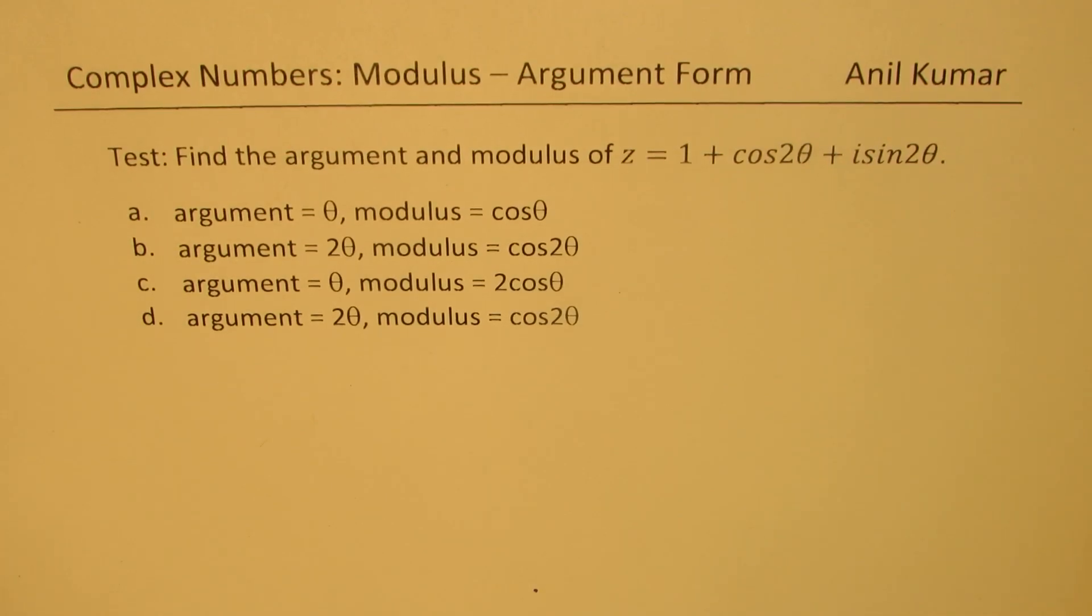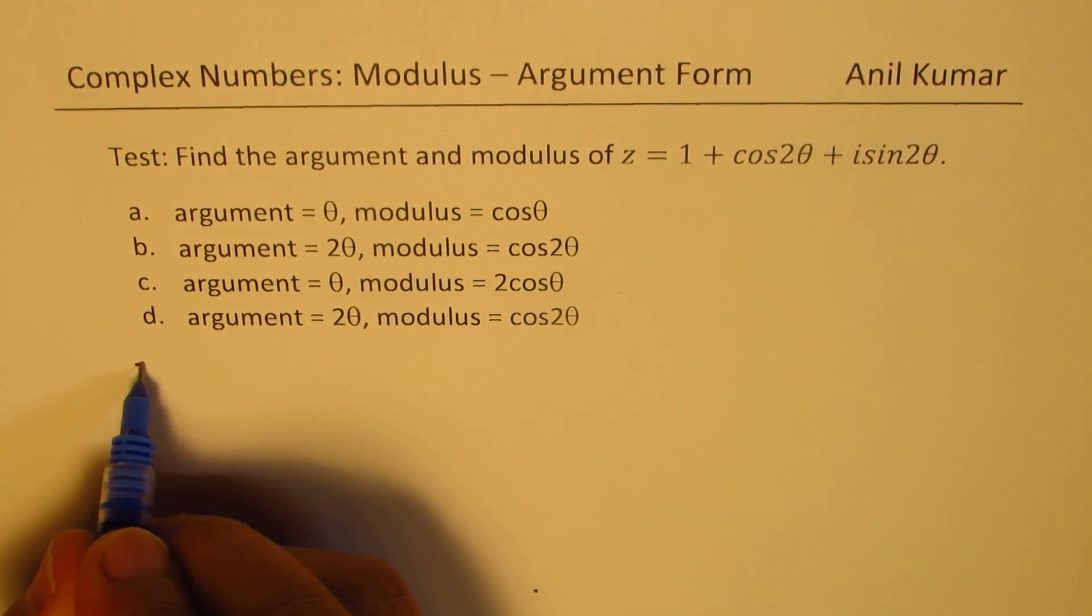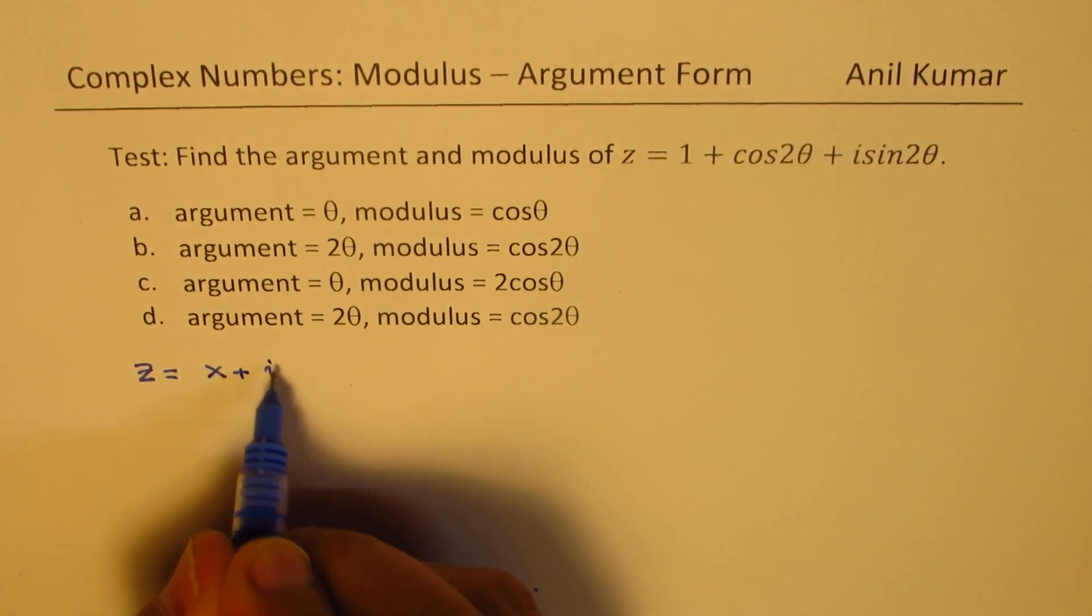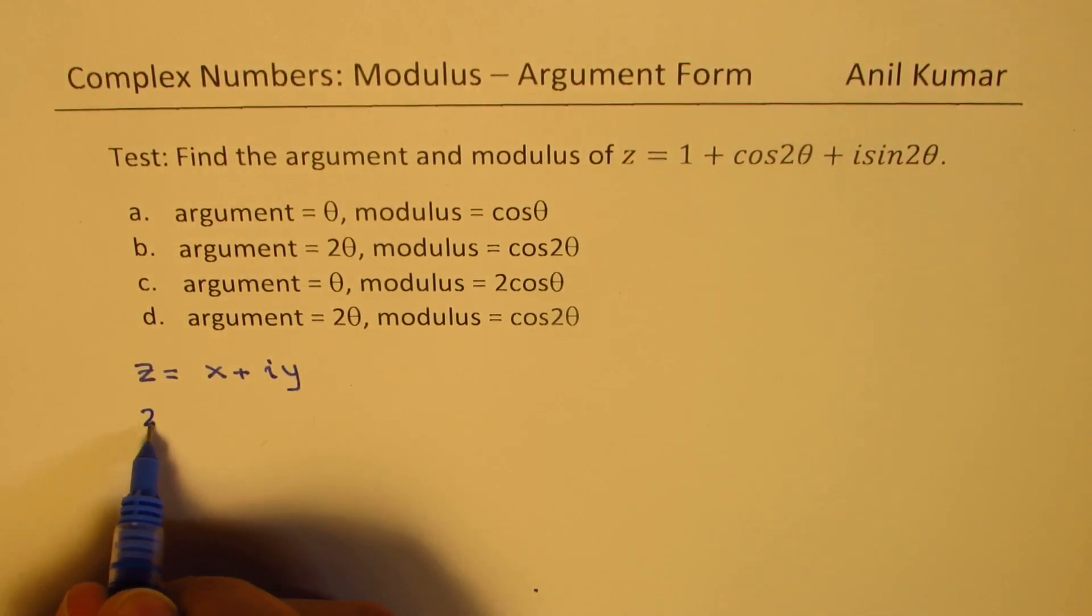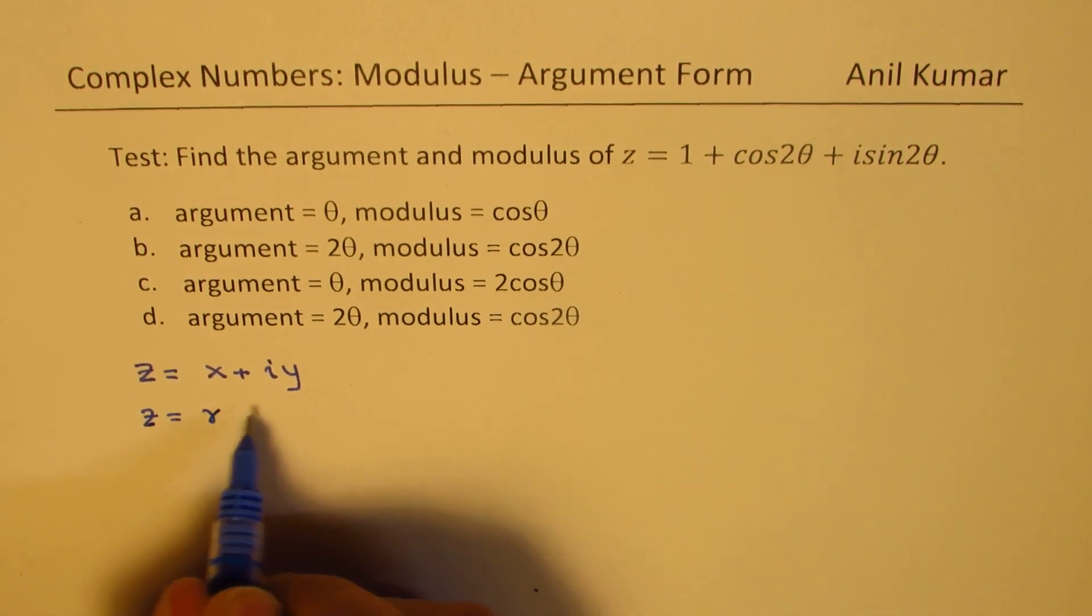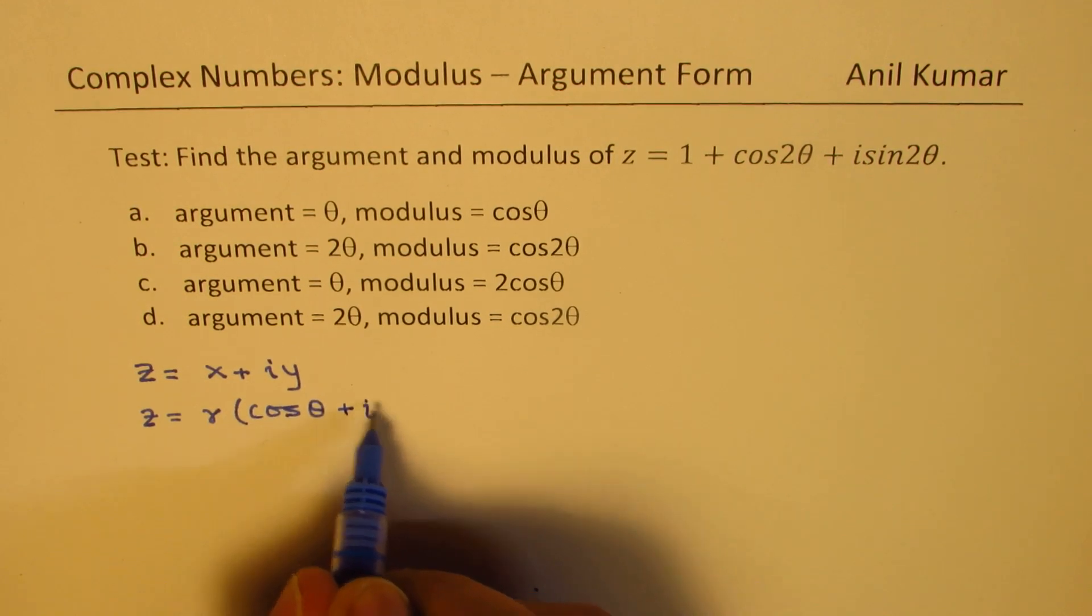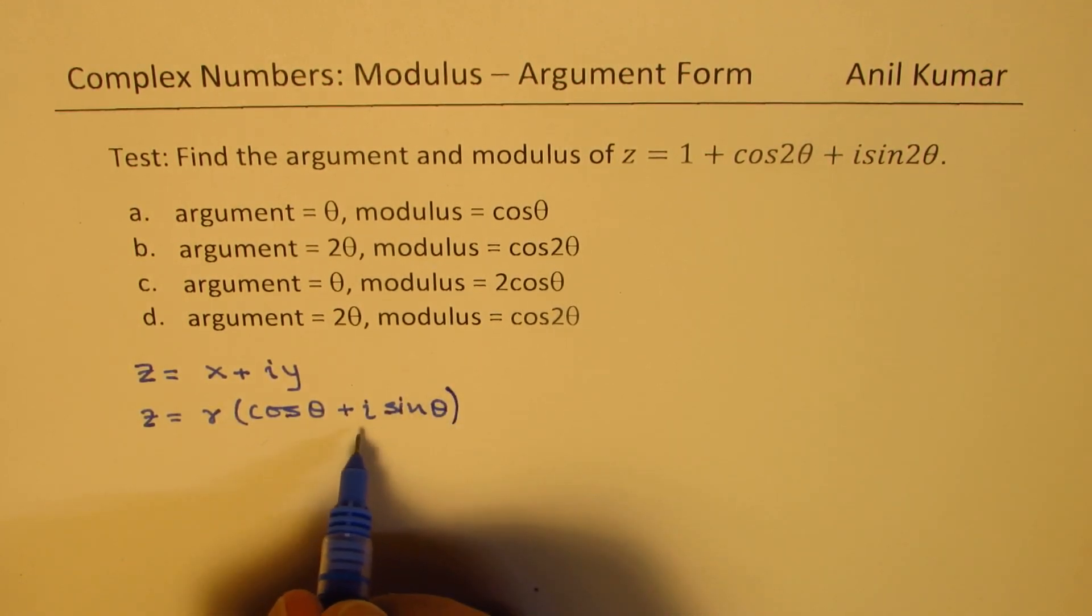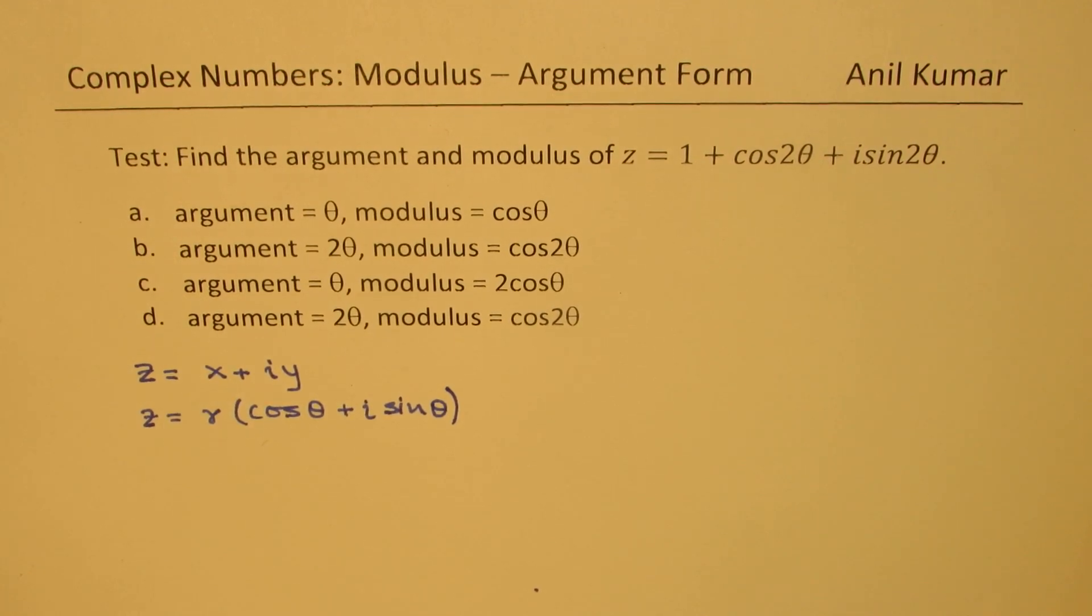I am Anil Kumar. Welcome to my series on complex numbers. We have been learning how to write a variable complex number which is z equals to x plus i y in terms of z equals to r cos of theta plus i sine theta. That is the modulus argument form or also known as the polar form.